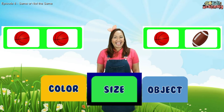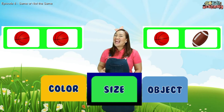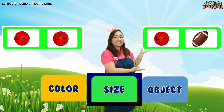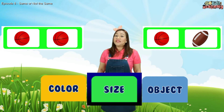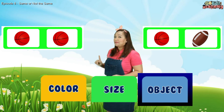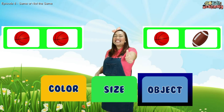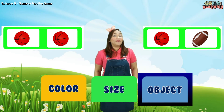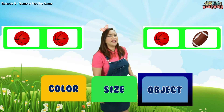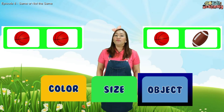Let's now consider the size. Do they have the same size? Yes, they have the same size. How about this one? They don't have the same size. One is bigger than the other. How about the object? One is a basketball. The other one is also a basketball. So are they the same? Yes, they are the same. How about this one? The other one is a basketball, and the other one is not a basketball — it's called a football, an American football ball.